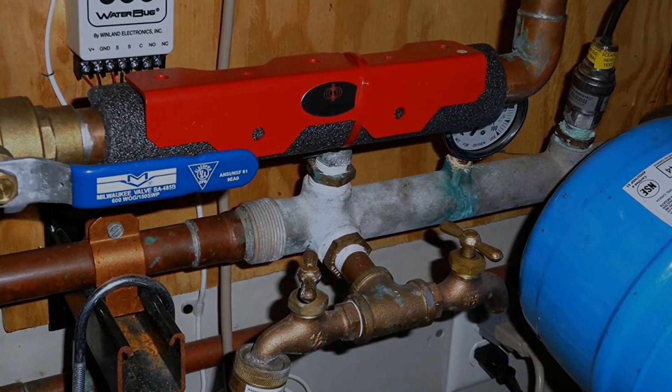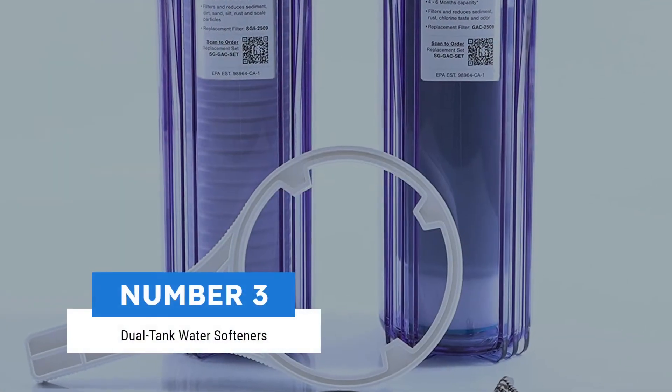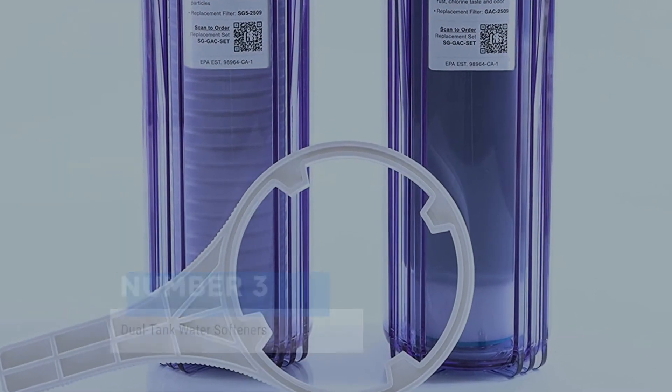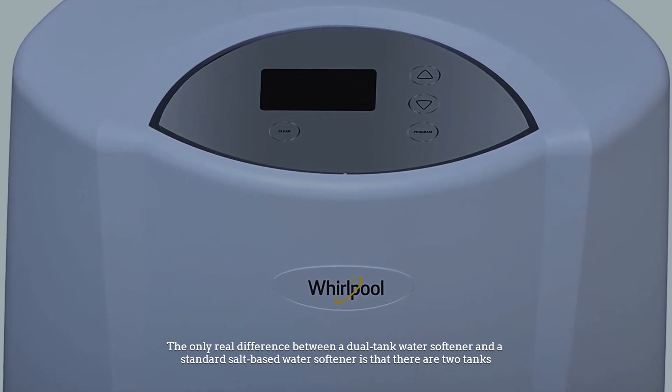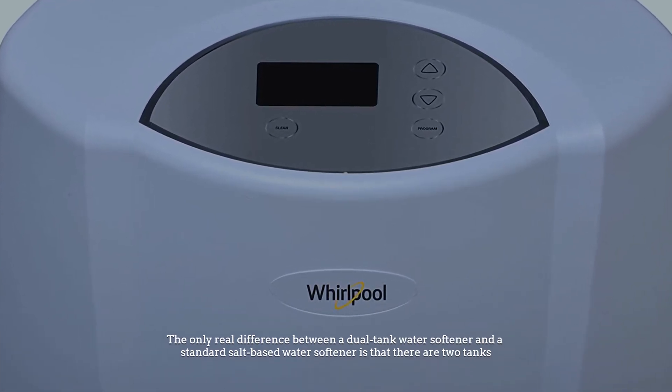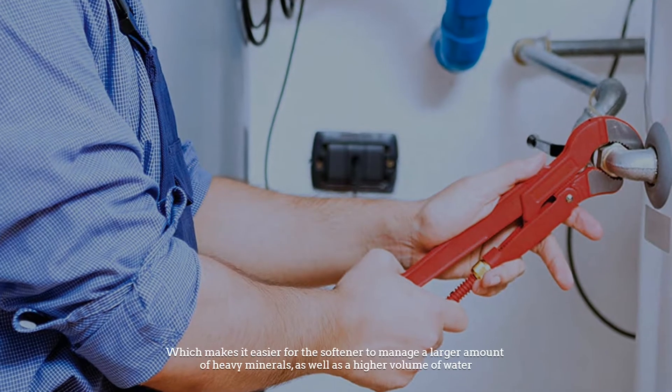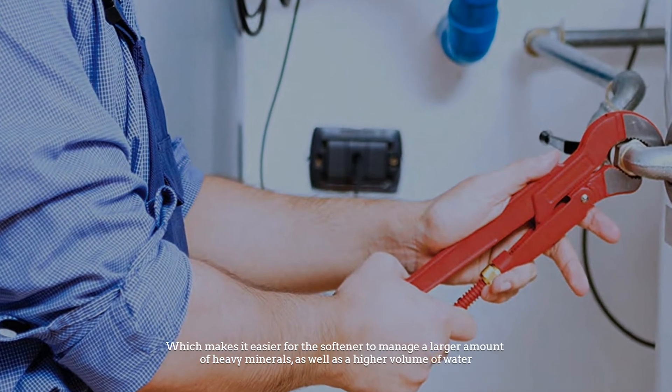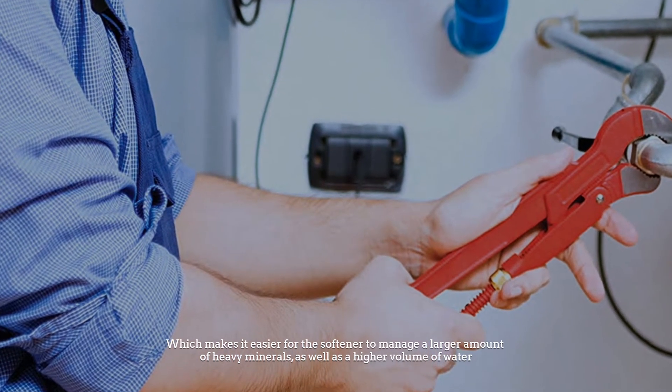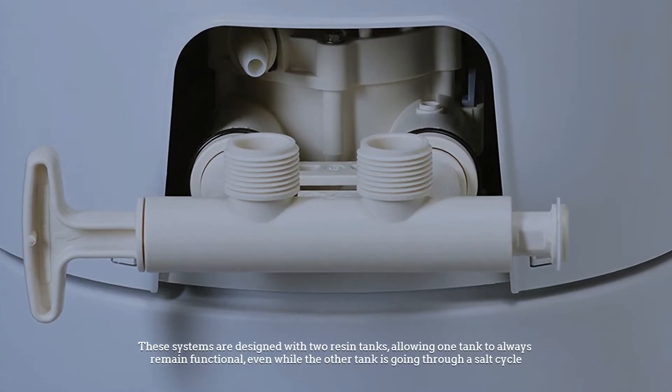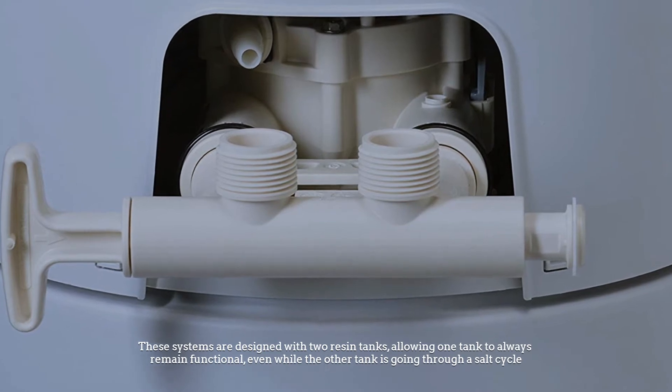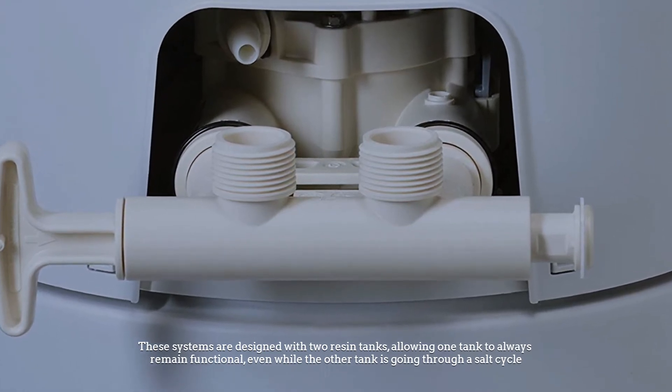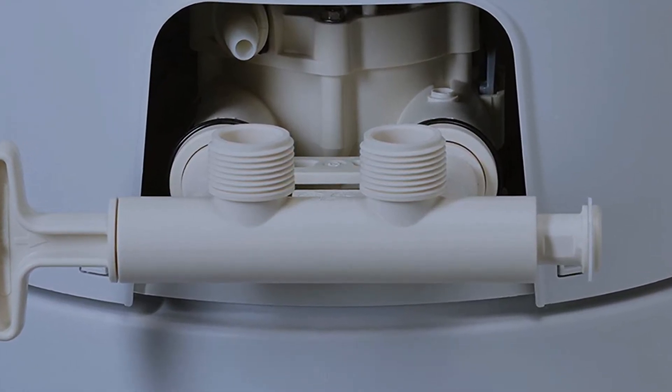Number three: dual tank water softeners. The only real difference between a dual tank water softener and a standard salt-based water softener is that there are two tanks, which makes it easier for the softener to manage a larger amount of heavy minerals as well as a higher volume of water. These systems are designed with two resin tanks, allowing one tank to always remain functional even while the other tank is going through a salt regeneration cycle.